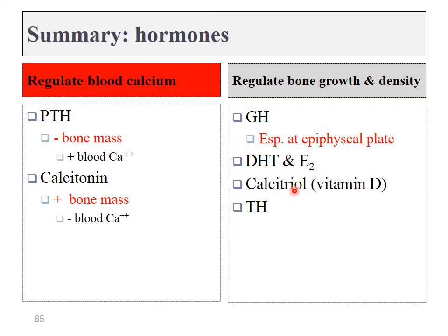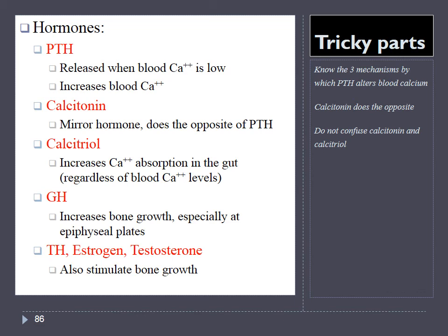Keep in mind that you can also find calcitriol in the bloodstream when blood calcium is too low. When that happens, PTH is secreted, which activates calcitriol to try and increase calcium absorption from the gut. To summarize: we cannot look at calcitriol levels and make any sort of diagnosis as to whether bone density is healthy or unhealthy. Make sure you understand when these hormones are produced, what their effects are on the body especially related to bone tissue, and whether that's a direct or indirect effect.